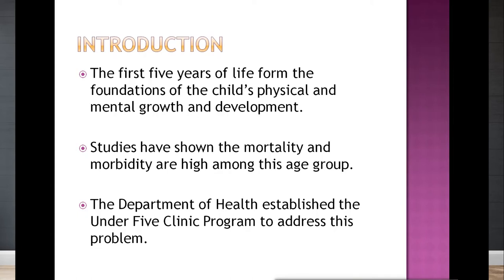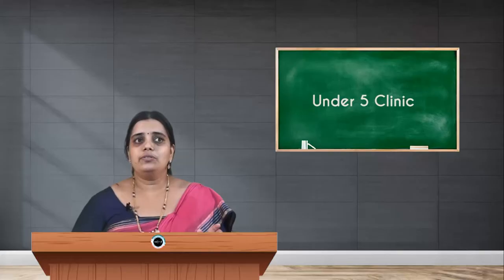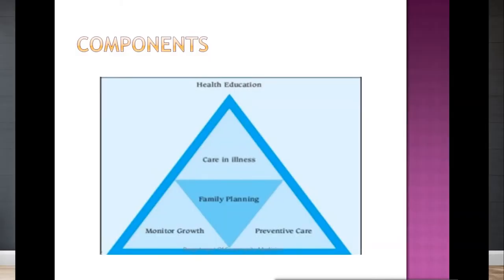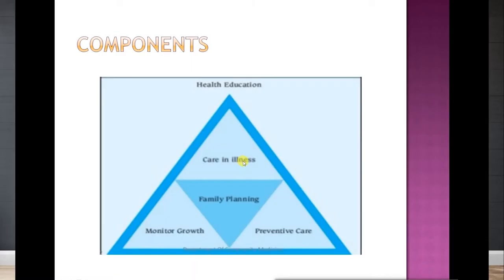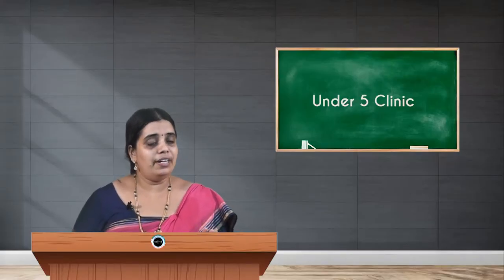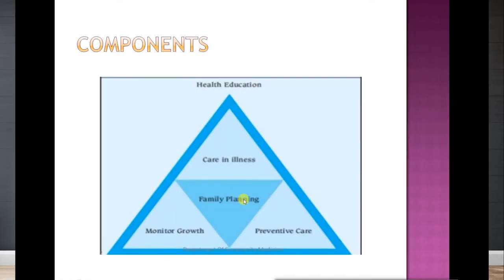The department of health established the under-five clinic program to address this problem — to bring down the mortality and morbidity in children under five. Please follow the diagram here. There are five different components: an outer triangle pointing upwards and an inner triangle pointing downwards, creating four components inside, with the fifth on top. The five important components are: care during illness, growth monitoring, preventive care, health education for the mother and family, and family planning.